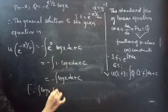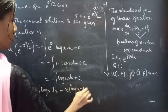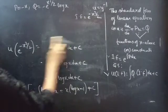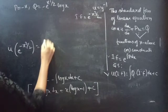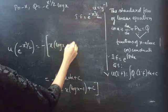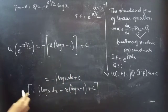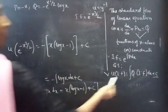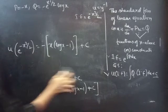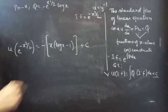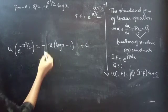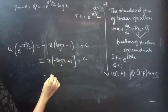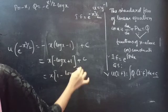Since e^(x²/2) times e^(−x²/2) equals e^0 equals 1, the integral simplifies to −∫log x dx plus c. Since ∫log x dx equals x(log x − 1), this becomes −x(log x − 1) plus c, which equals x(1 − log x) plus c.